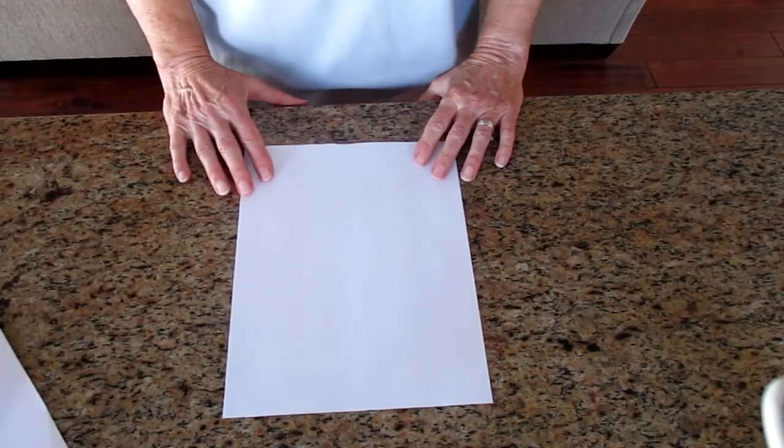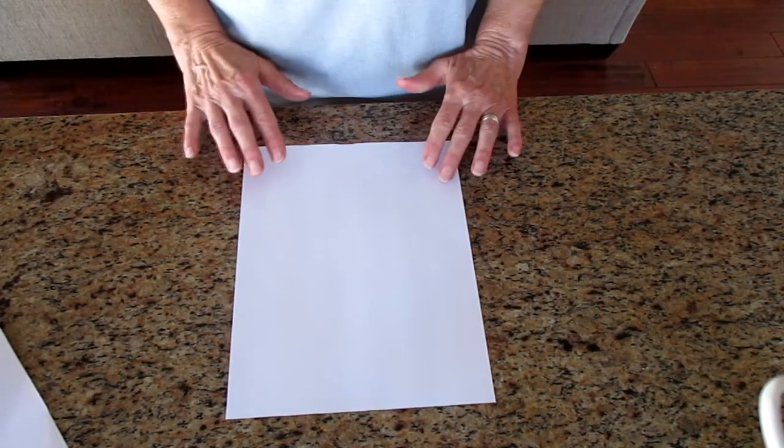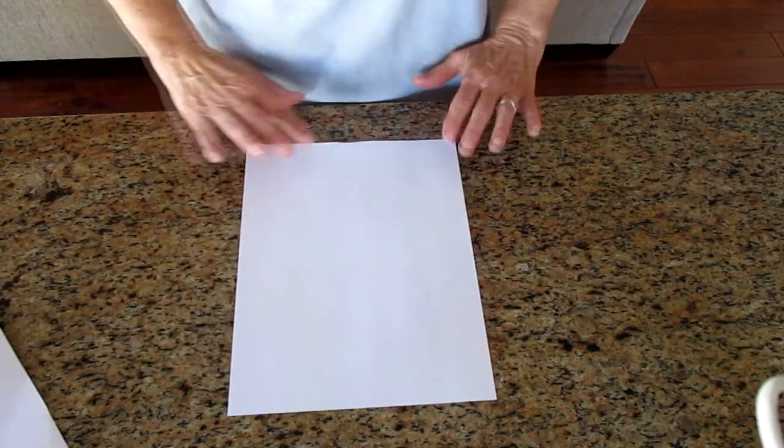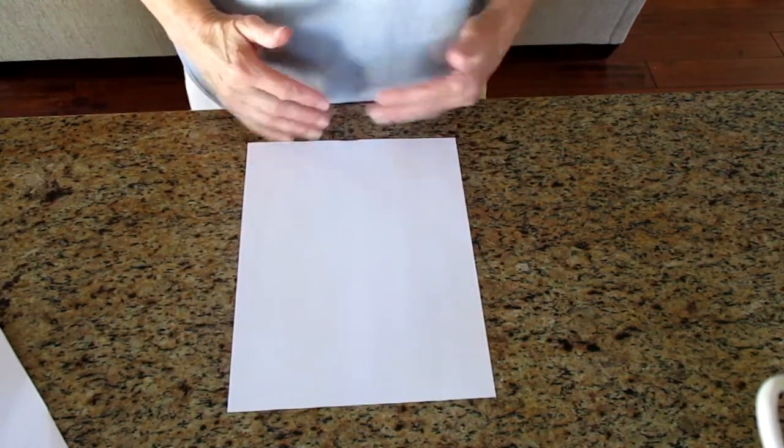Hi everybody, this is Miss Suzanne and it's Tinkering Tuesday again. I'm going to show you how to make a paper airplane today. You need one piece of paper and you will hold it in front of you just like this with the short side at your tummy.